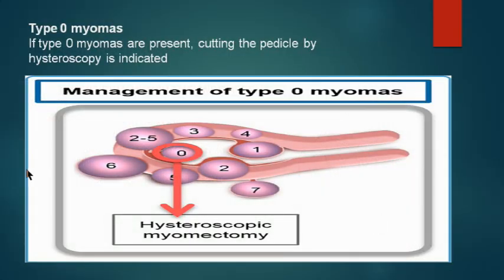To revise: type 0 myomas are pedunculated and lying within the cavity. The treatment of choice is hysteroscopic myomectomy — that is, cutting the pedicle by hysteroscopy is indicated.